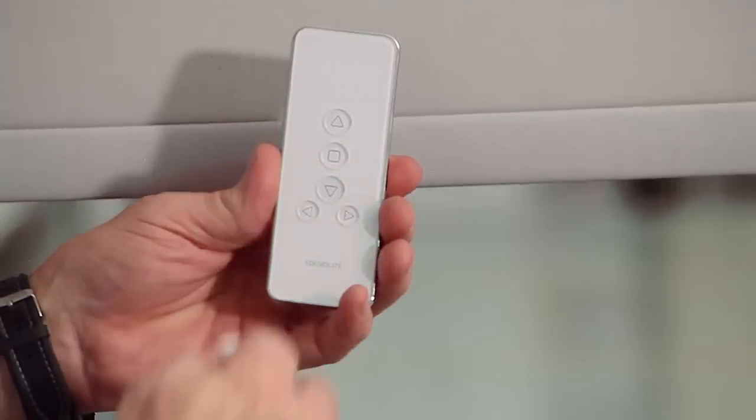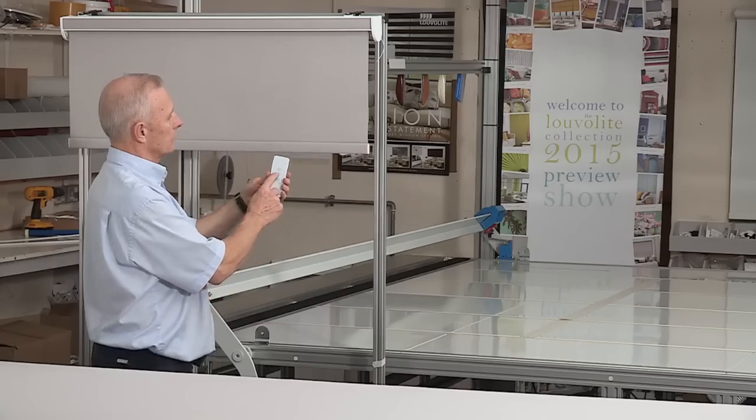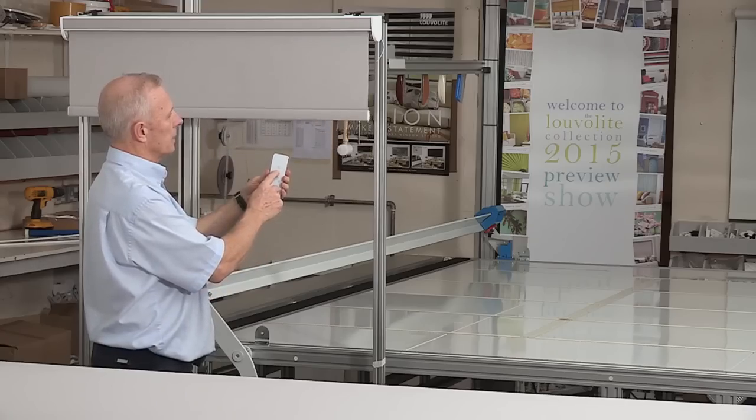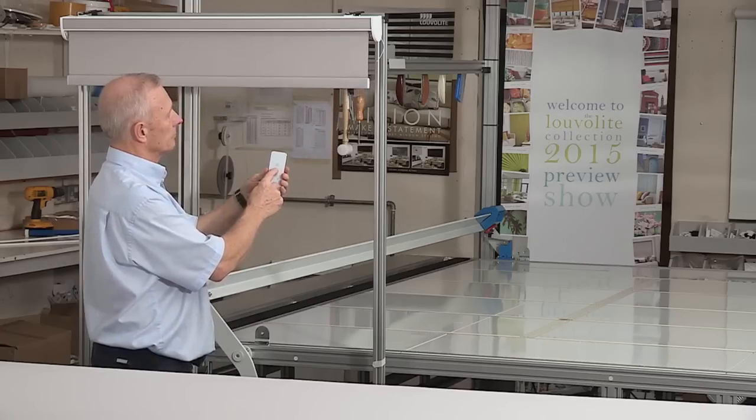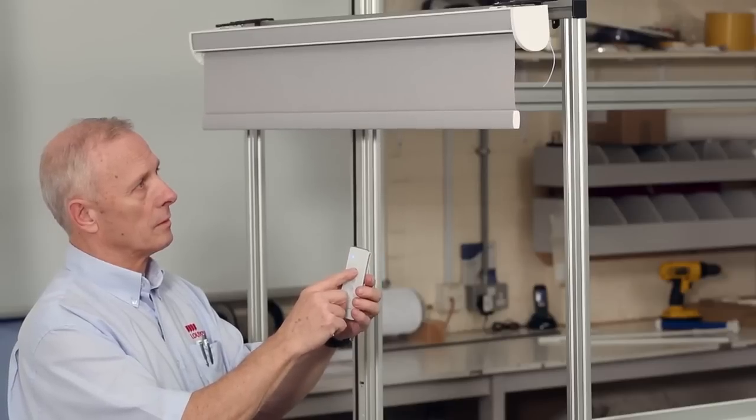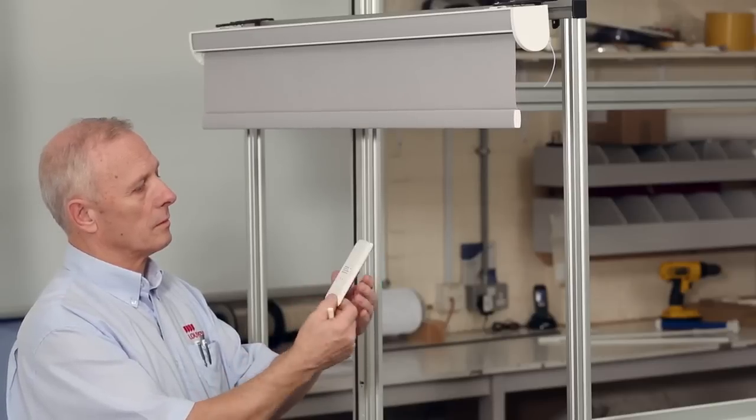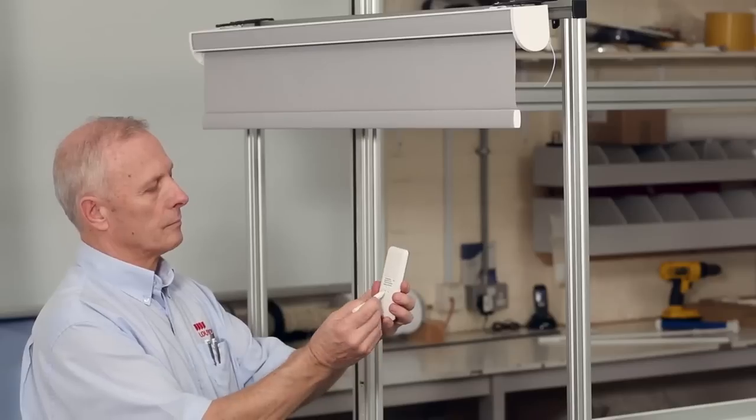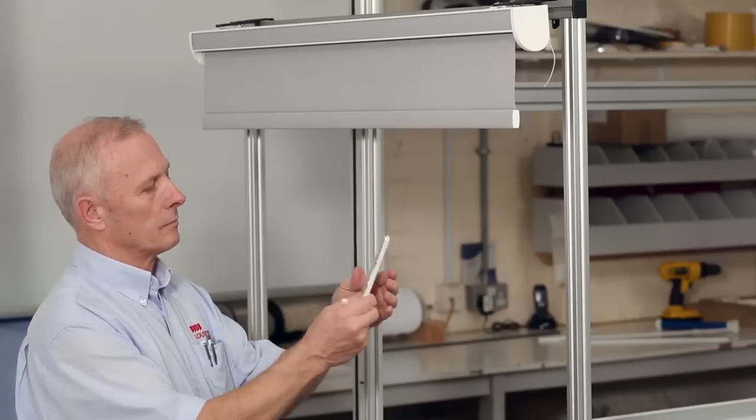To set the upper limit, press the up button on the remote and when the motor gets close to the required upper limit, press the stop button. Press the up button to set the upper limit accurately. Press the confirm button on the remote. When the motor jogs twice the setting has been completed.